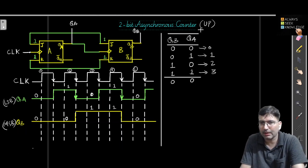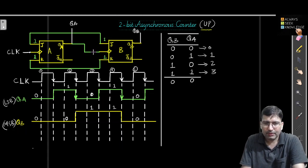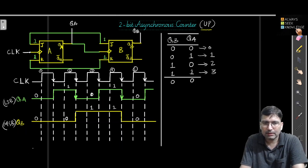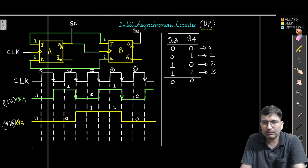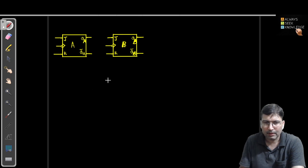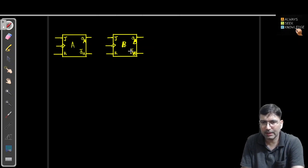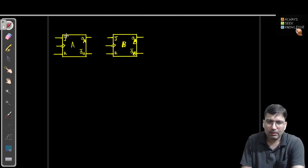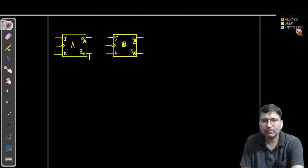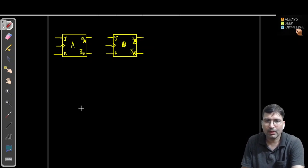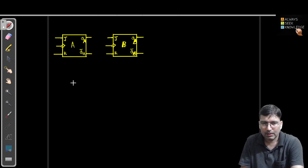This is an up counter. Now if we want to convert this into a down counter, let me clear this and try to convert. If we want to convert this circuit as a down counter, we are having two choices for how we can convert this circuit to behave like a down counter.